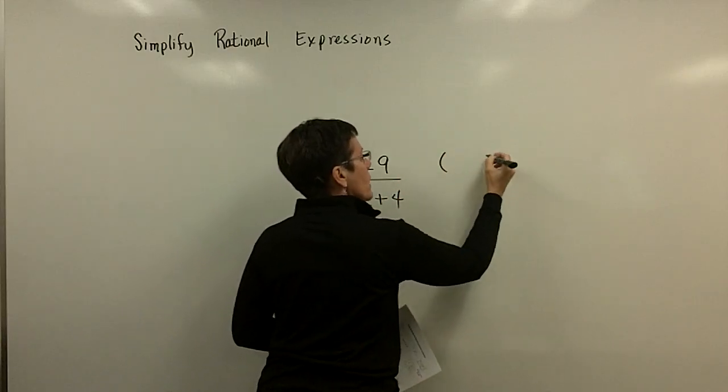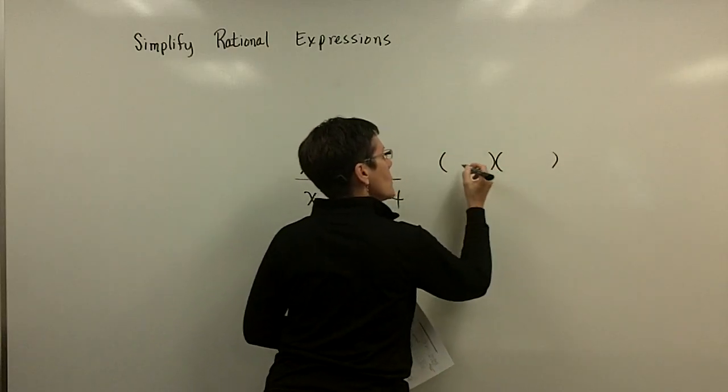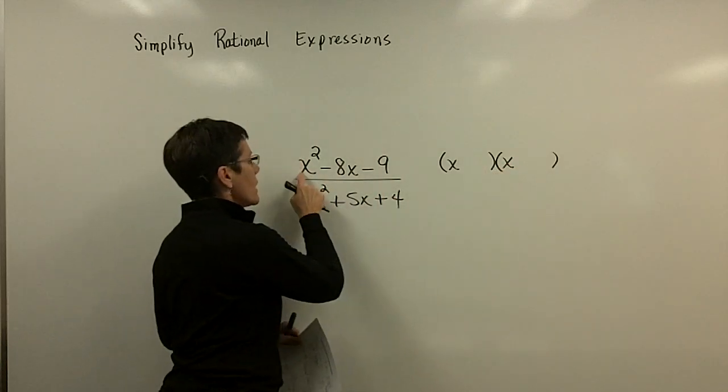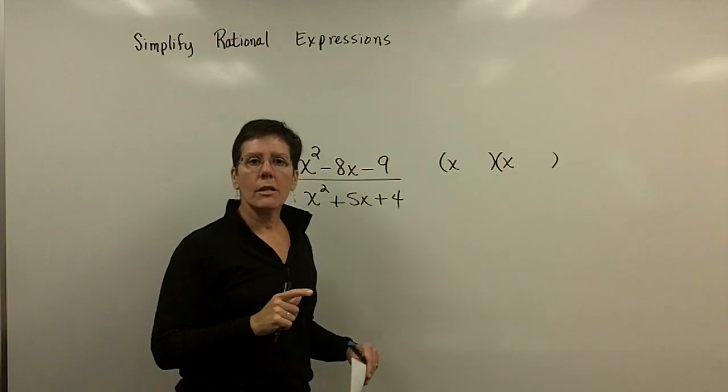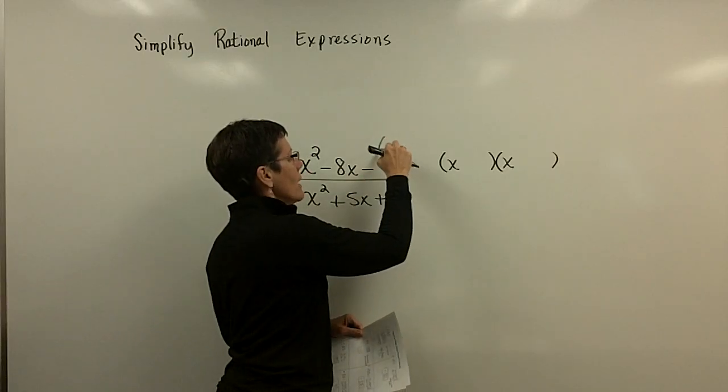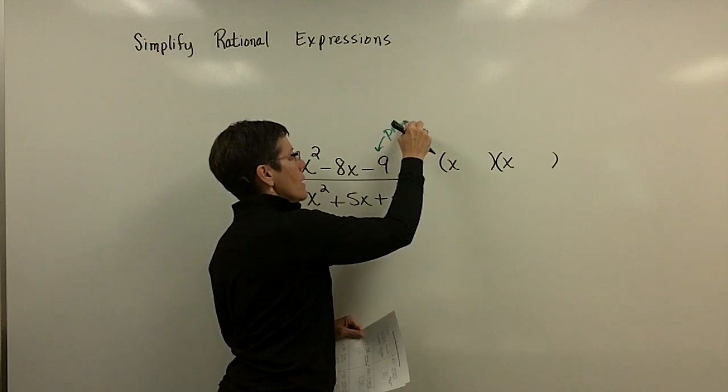So this numerator can be factored into the product of two binomials, where there's an x in the front of each of those because their product would be x squared. And I'm now looking for two numbers whose product, remember, product is a negative 9,